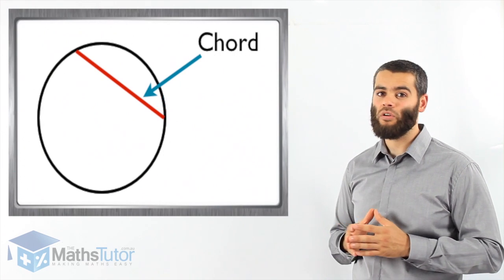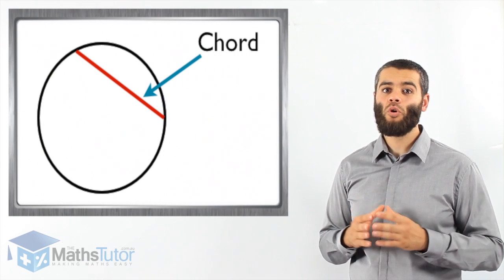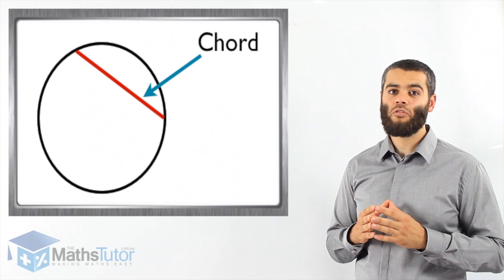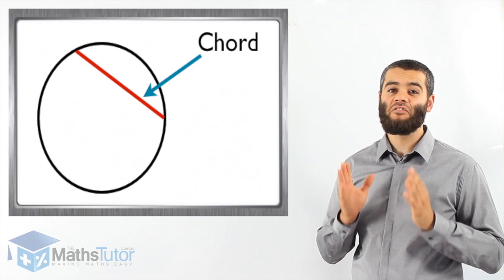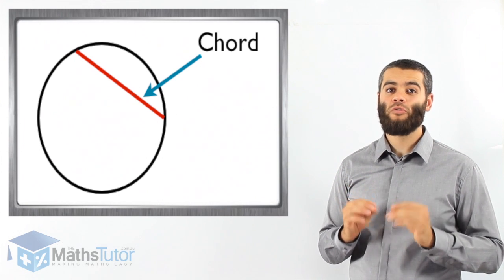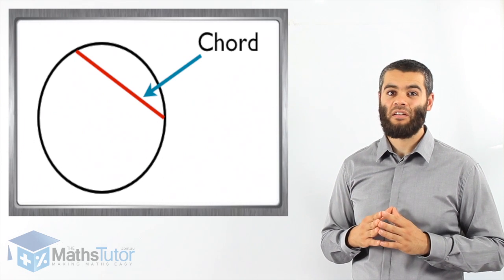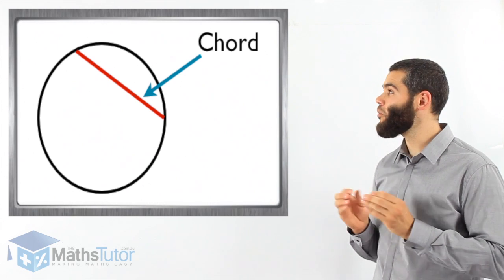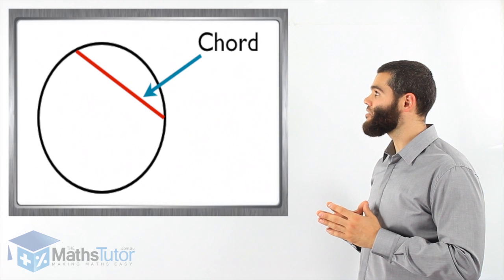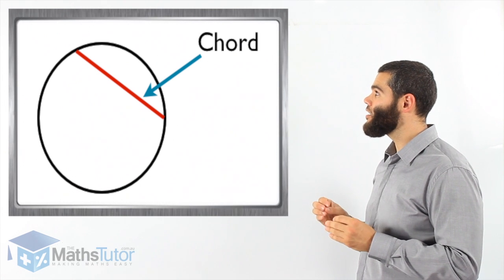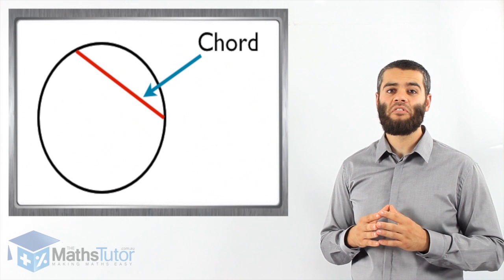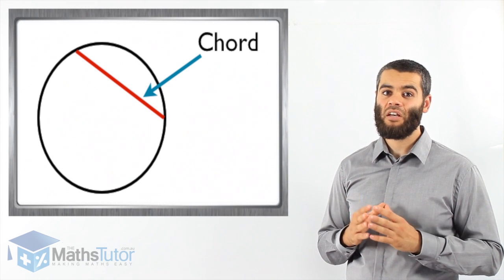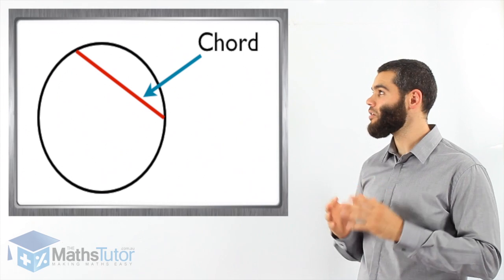Then we have the chord. The chord is a line that goes from one end of the circle to the other, but it does not go through the center. It is a straight line — it goes from one end of the circle to the other end, but it does not go through the center. It's called a chord.